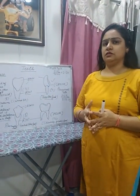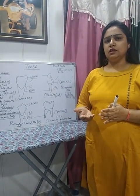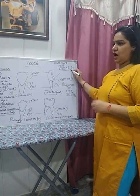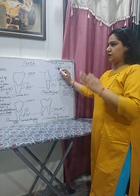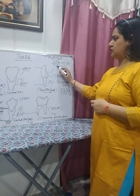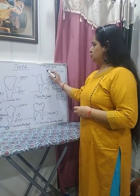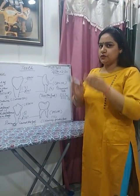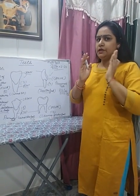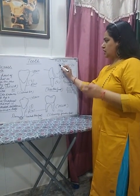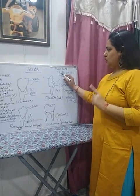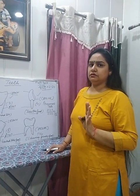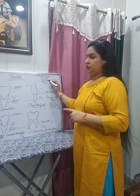For the milk teeth, there are 20 teeth — 10 in each jaw. The dental formula for half a jaw is: 2 1 0 2 upon 2 1 0 2, multiplied by 2. This means: in the upper half-jaw, 2 incisors, 1 canine, 0 premolars, and 2 molars. Note that there are no premolars in milk teeth. The same applies to the lower jaw: 2 incisors, 1 canine, 0 premolars, and 2 molars.